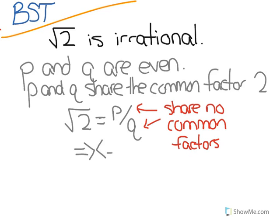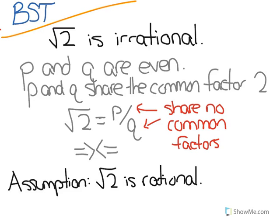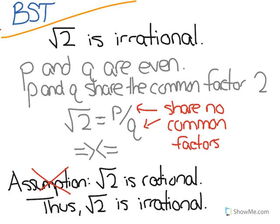This is the symbol for contradiction. And so our assumption that root 2 is rational must be false. Thus, root 2 is irrational, and we proved it using proof by contradiction. We took a statement, assumed its opposite, and then showed that that opposite led to a contradiction.